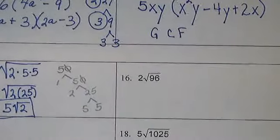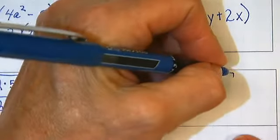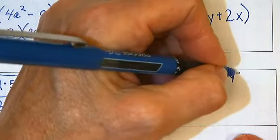Problem sixteen. Two times ninety-six. Two times the square root of ninety-six.